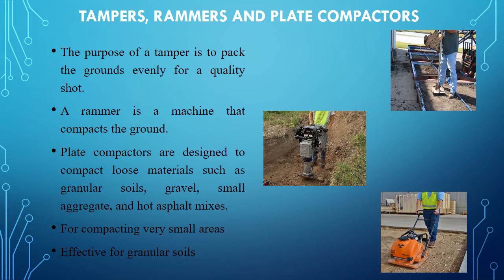A rammer is a machine that compacts the ground and is used for shallow compaction. Plate compactors are designed to compact loose materials such as granular soils, gravel, small aggregate, and hot asphalt mixes. Tampers, rammers, and plate compactors are used for compacting only very small areas and are effective mainly in the case of granular soils.